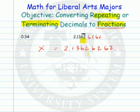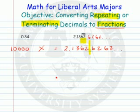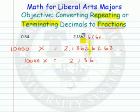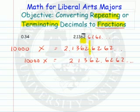Step 1 is to multiply both sides by something that will get the decimal point to the right of the first repeat. Moving it 1, 2, 3, 4 places means we multiply by 10,000. So we have 10,000x equal to 21362.6262 and so forth.